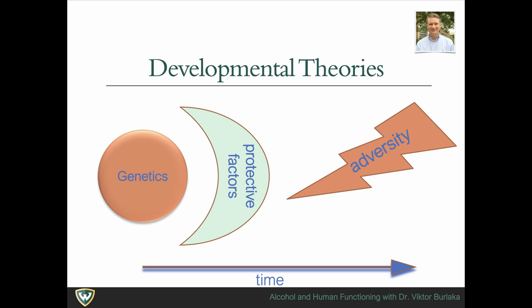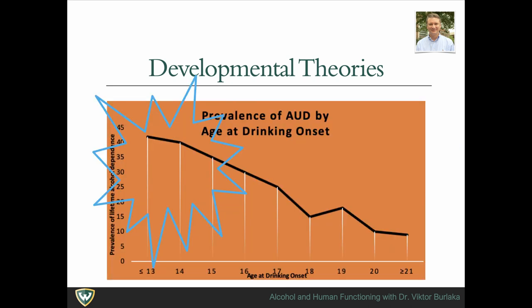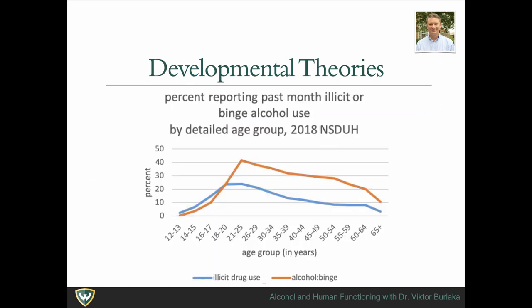Relatively recently, scholars have begun to argue that substance use disorder is a developmental disorder. Genetic and neurobiological risk factors interact with exposure to adverse life experiences and protective mechanisms, resulting in a certain pattern of behaviors over time. The earlier children start using alcohol, the higher the risk of developing lifetime alcohol dependence. Young adults have the highest level of binge alcohol use; over time, many transition to family and employment, while those who continue high-risk use may not survive to be represented in later age groups.